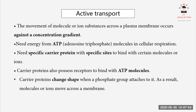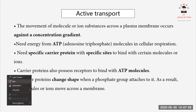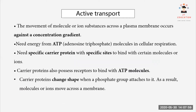Active transport is the movement of molecules across a plasma membrane which occurs against the concentration gradient, meaning from a low concentration area to a high concentration area. Active transport needs energy in the form of ATP.